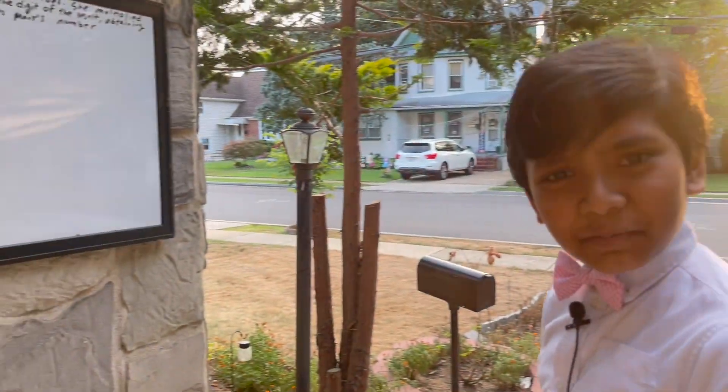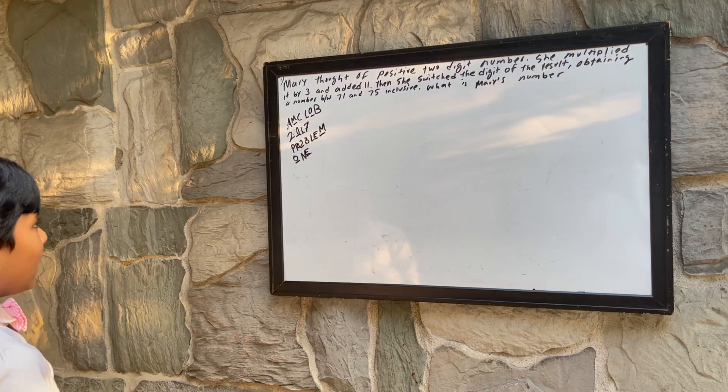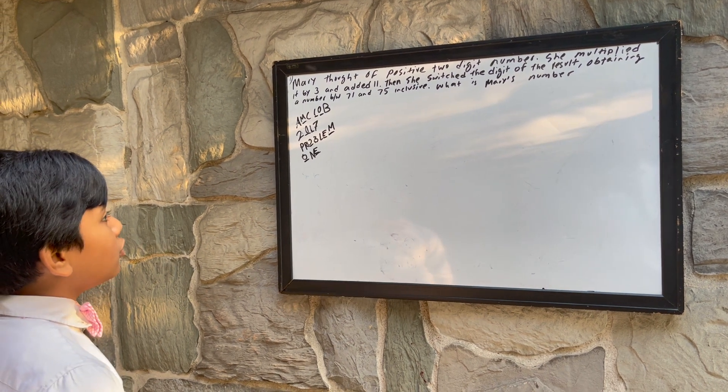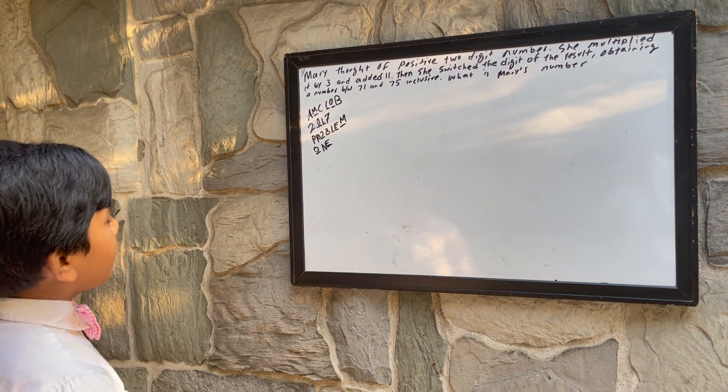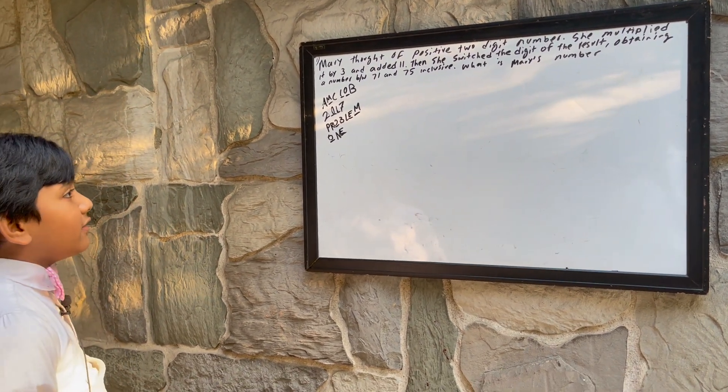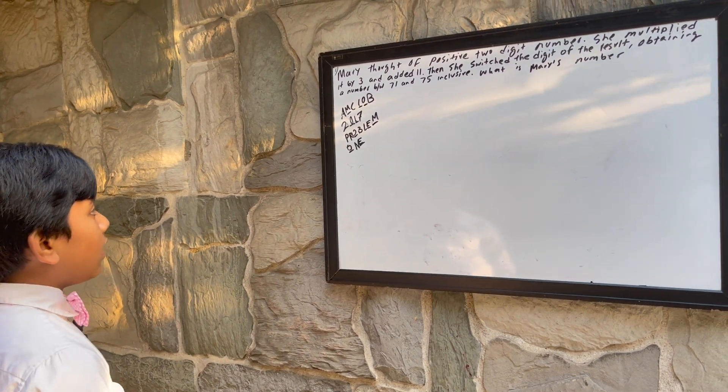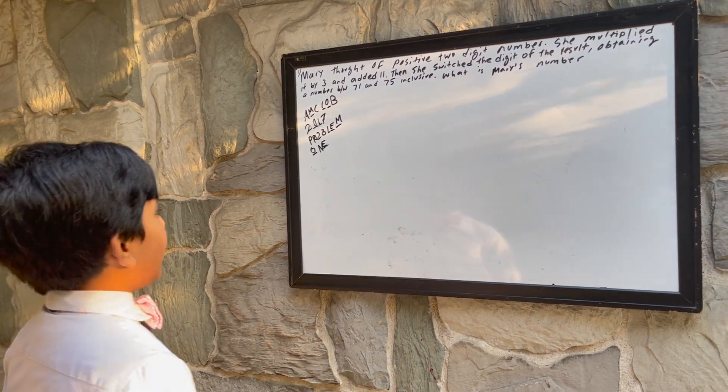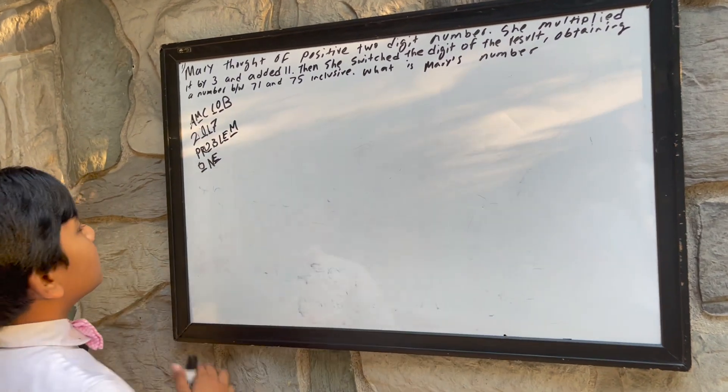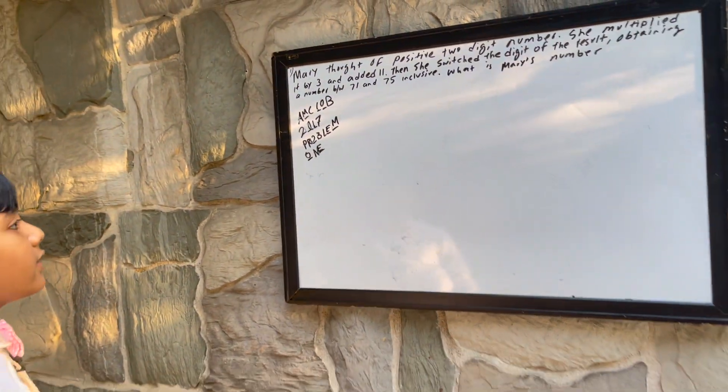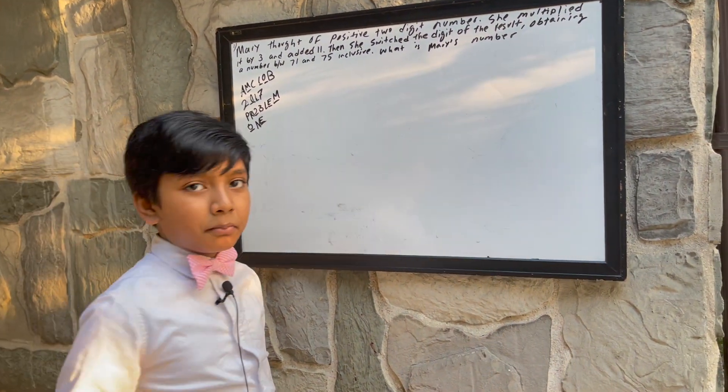This is 2017 problem number one. Mary thought of a positive two-digit number. She multiplied it by three and added 11. Then she switched the digits of the result, gaining a number between 71 and 75, inclusive. What is Mary's number?